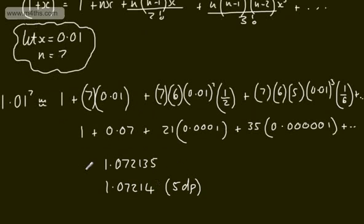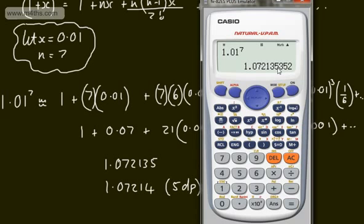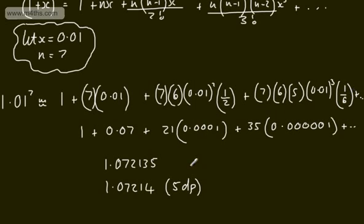How accurate is this? Checking on a calculator with the actual value of 1.01^7, we can see the approximation is accurate up to the sixth decimal place. Including more terms — the quartic term for instance — would add further digits. But when x is small, each additional term adds an increasingly insignificant amount, so at 2 or 3 decimal places the result would not be affected.